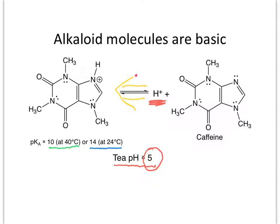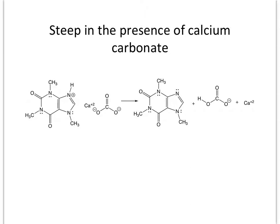We need to shift that equilibrium back the other direction, and to do that we use calcium carbonate as a base. In the presence of calcium carbonate, the protonated form of caffeine in the steeped tea will react with the carbonate ion to make the deprotonated, neutral form — which will be soluble in our organic solvent — leaving bicarbonate ion and calcium ion. That's why we need the base: so we end up with the neutral form of caffeine that we can extract.